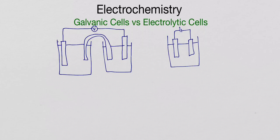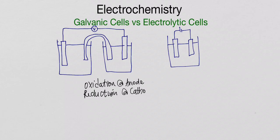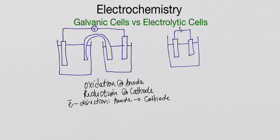Both galvanic and electrolytic cells have oxidation and reduction occurring. Oxidation always happens at the anode — it doesn't matter which type of cell it is. Reduction will always be at the cathode. That is a rule you can learn — it stays constant. Similarly, the flow of electrons always goes from anode to cathode. That is also constant, both in galvanic cells and electrolytic cells.